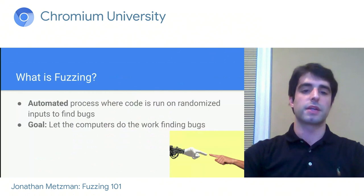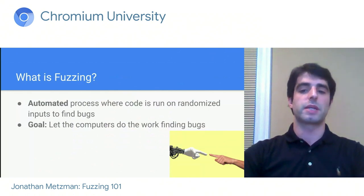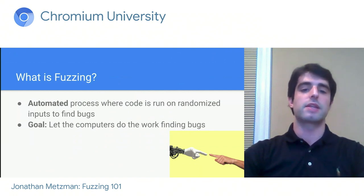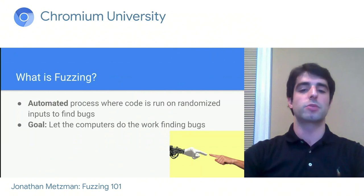So what is fuzzing? Fuzzing is an automated bug-finding technique where randomized inputs are fed to a target program in order to get that target program to crash. The idea behind this is that computers are cheaper than humans and can find some bugs better than humans, so rather than using humans to find bugs, we'll use computers instead.